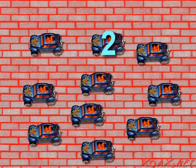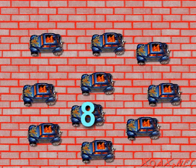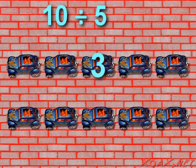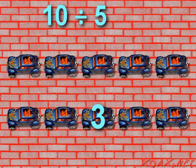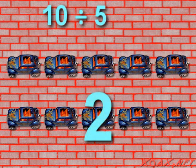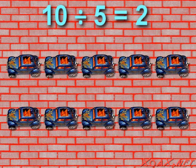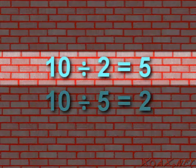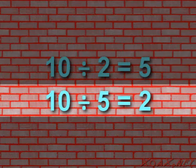On the other hand, if we have ten cars and divide them into groups of five: one, two, three, four, five; one, two, three, four, five. Then we see that ten cars can be divided into one, two groups of five. So ten divided by five equals two. Once again, we can swap the number that we are dividing by and the answer, and we see that the equation is true both ways: ten divided by two equals five, and ten divided by five equals two.